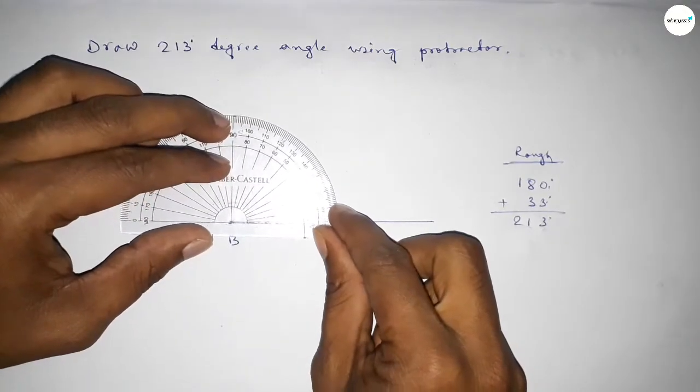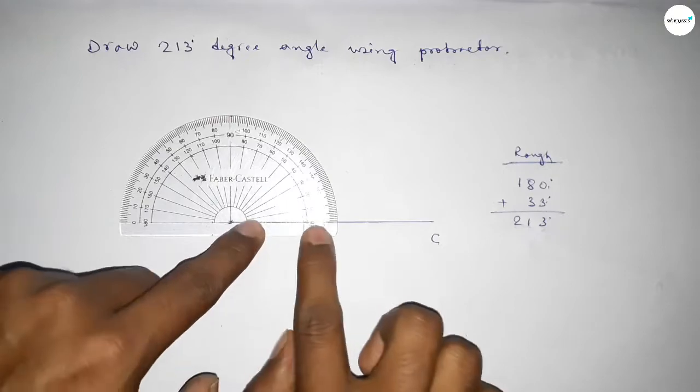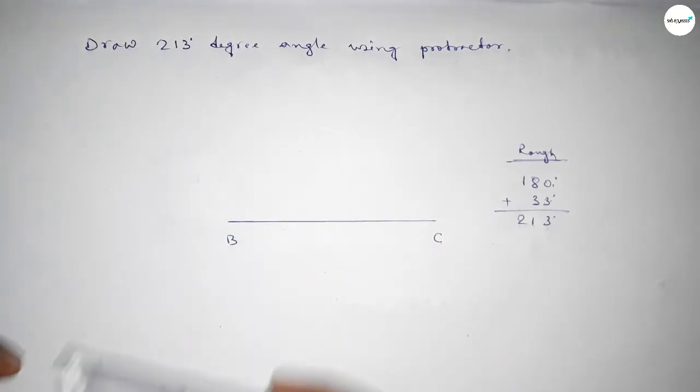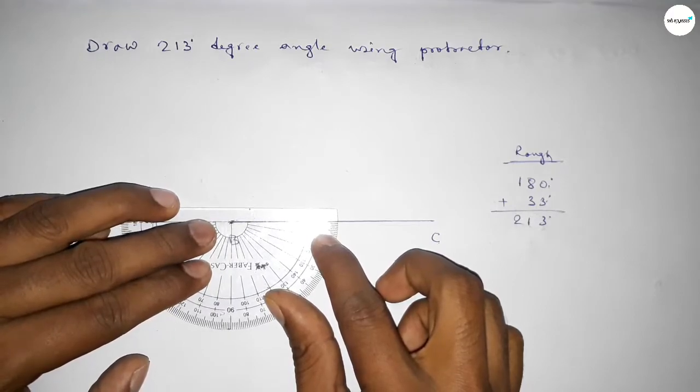So, putting the protractor on point B and counting 180-degree angle. This is 180 degrees. Now putting the protractor on point B this way and counting 33-degree angle.